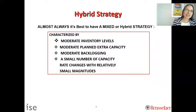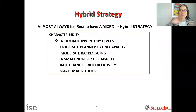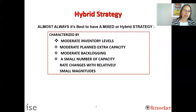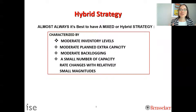It's almost always better to not just have one option, but to combine different buffers together — a moderate level of inventory, a moderate level of extra capacity, a moderate level of backlogging — while changing capacity a little but not making crazy changes. That's usually a good approach.